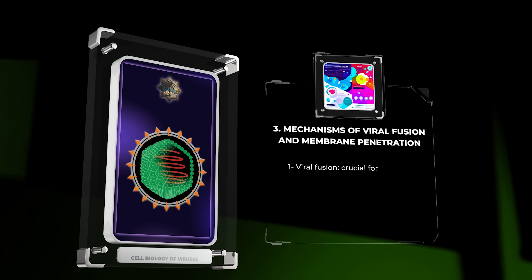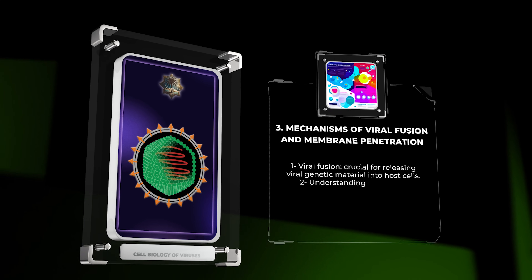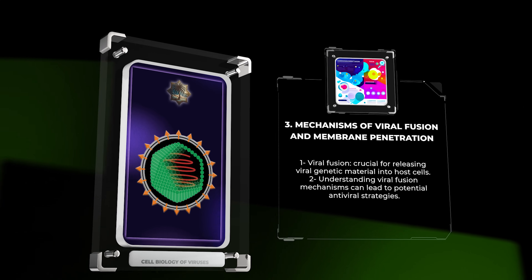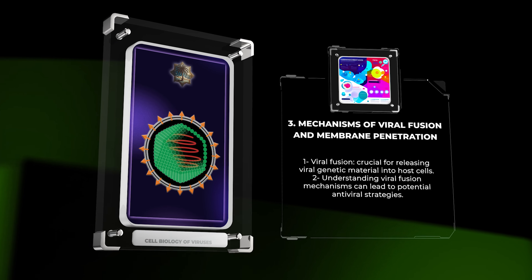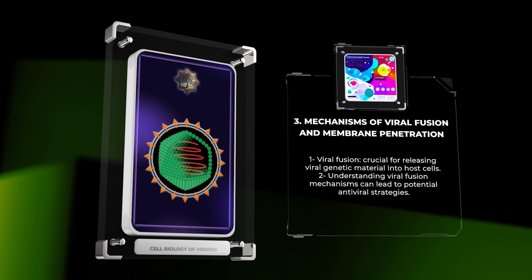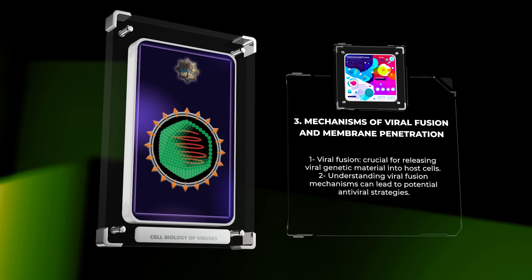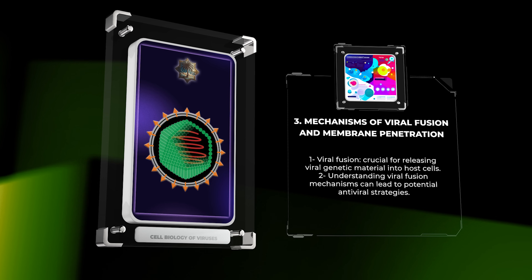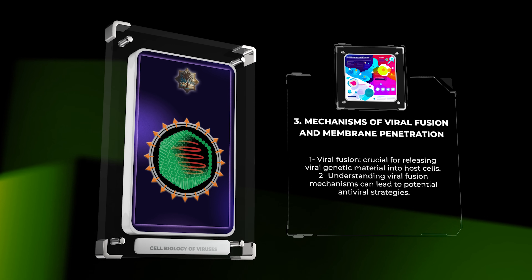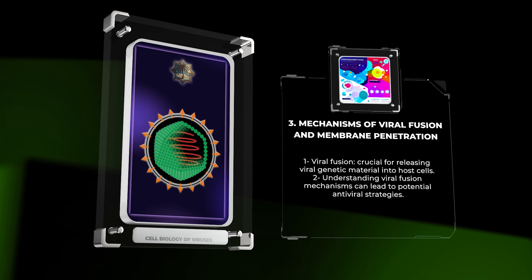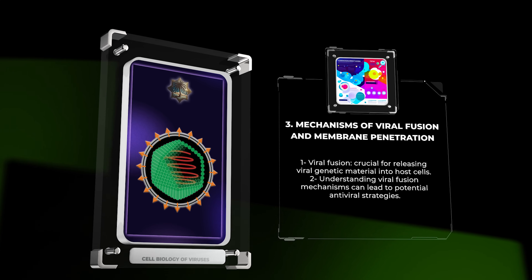We will discuss the process of viral fusion and membrane penetration. Viral fusion is crucial for releasing viral genetic material into host cells. Various viruses employ different mechanisms for fusion, such as endosomal acidification or exploitation of cellular membrane fusion machinery. Understanding these mechanisms can lead to potential antiviral strategies.